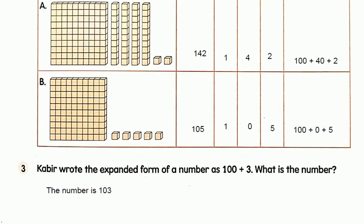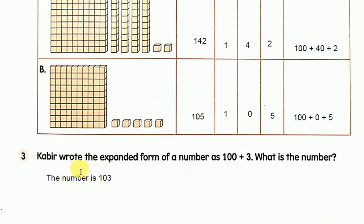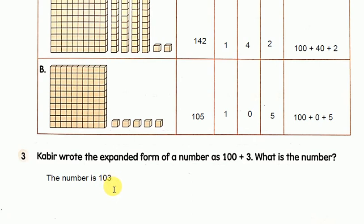Now coming to question 3: Kabir wrote the expanded form of a number as 100 plus 3. You have to write what the number is. As we did for 105, there are no tens here — only hundreds and ones. So the number is 103. Since there is no tens, you have to put a 0 in the tens place. If you write only 1 and 3, it becomes 13, which is wrong. You must write 1, 0, 3 — 100, 0 in the tens place, and 3 in the ones place.